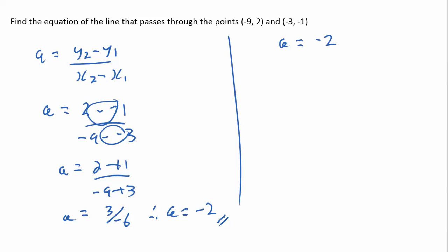I then substitute it into the gradient point equation. Once again just watch those groupings of two negatives together. It comes down to y plus 1 equals negative 2 lots of x plus 3.